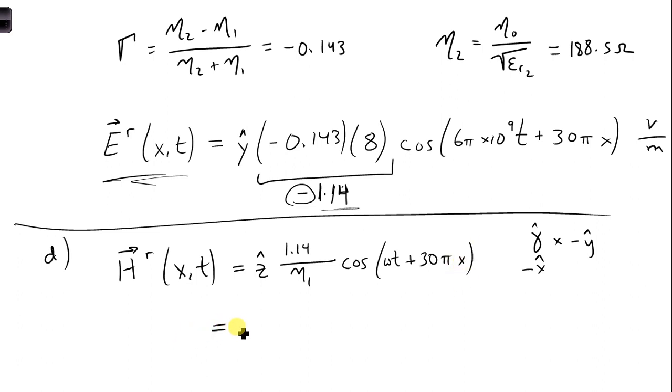We can simplify this. We get Z hat, and plugging in for eta 1, we get 4.54 milliamps per meter. For the cosine omega term, I can fill in 6 pi times 10^9 T plus 30 pi X. That's milliamps per meter.